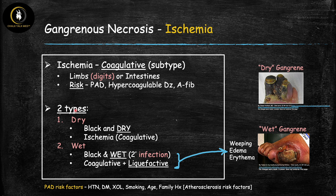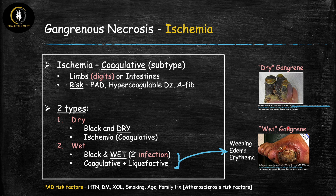There are two types of ischemic gangrene. Number one is dry gangrene: the tissue is black and dry, representing pure straightforward coagulative necrosis of the digits. Number two is wet gangrene: the tissue is black and wet, because there is a secondary infection of the dry gangrene, usually bacterial. Wet gangrene is a combination of coagulative necrosis from the ischemia and liquefactive necrosis from the secondary infection. At the center you have the black gangrenous portion, surrounded by weeping edema and erythema — this wetness signals secondary bacterial infection and is the key difference between wet and dry gangrene.